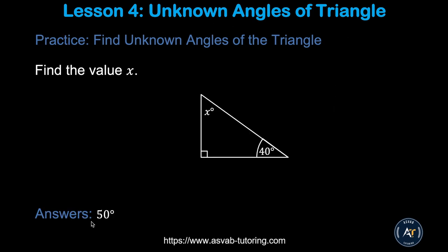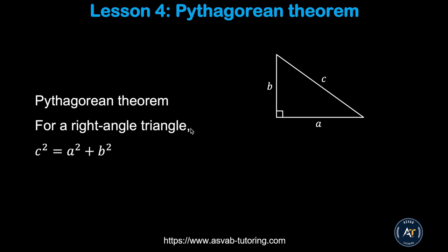Pause the video and try another practice problem. In that figure there is no angle marked, which means it is a right angle of 90 degrees. Try it by yourself and make sure you get 50 degrees for the missing angle.